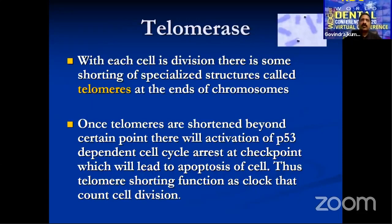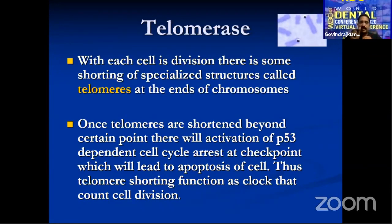There are other things called telomeres — the ends of chromosomes. Whenever cells divide, there is shortening of the chromosome ends. When the two ends come too close, there is apoptosis. There is an enzyme called telomerase which inhibits this shortening of telomeres. Unfortunately, tumor cells have gained the ability to secrete their own telomerase in excessive amounts, so the telomere ends are not getting shortened. The lifespan of the cells is therefore increased. Telomeres and telomerase are an important part of cancer biology.